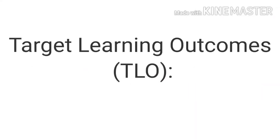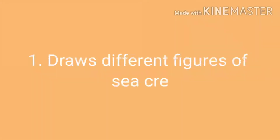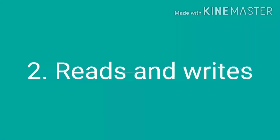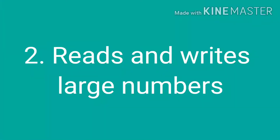Target Learning Outcomes, or TLO, refers to what you will learn after completing this chapter. First, you can learn to draw different figures of sea creatures using different shapes of mathematics.